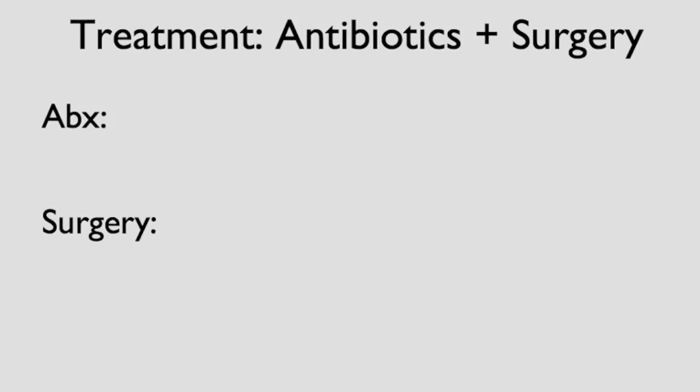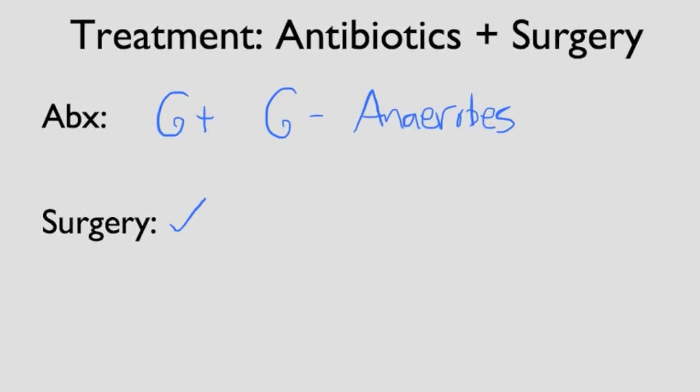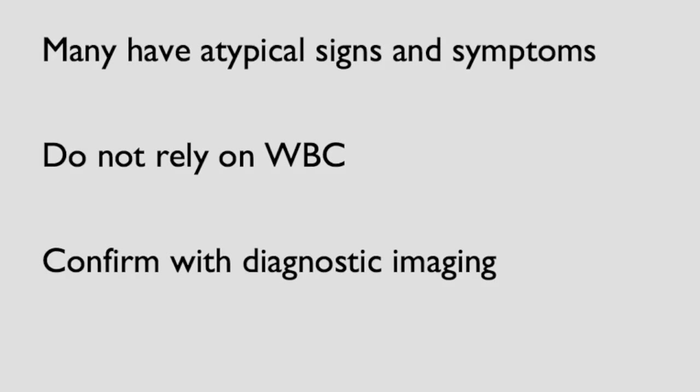Once the diagnosis is made, give IV antibiotics covering gram-positive, gram-negative, and anaerobes, and involve a surgeon. In most cases the patient will have surgery, though in some cases the surgeon may offer antibiotics only instead of appendectomy — this is surgeon and center specific. In summary: even though typical symptoms are easy to spot, many patients have atypical signs and symptoms. Remember the specific populations: the elderly, the young, pregnant patients, and the immunocompromised. We cannot rely on one clinical test or lab value to rule out the diagnosis — confirmation requires ultrasound or CT scan.